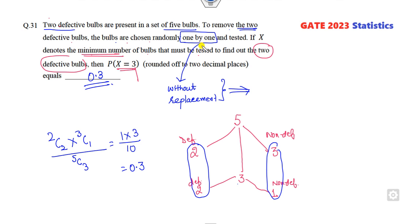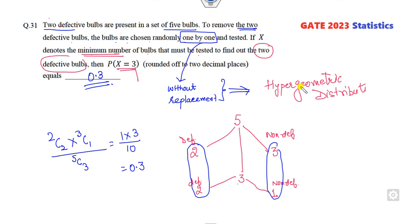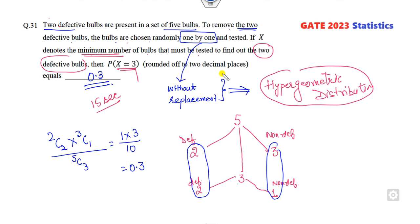That is very simple. You have to read the statement — since this is a question related to without replacement, remember this is called the hypergeometric distribution. If you want more questions related to these shortcut tricks, you can see my lecture on hypergeometric distribution in my playlist on probability and statistics. Within 10 to 15 seconds you can solve this if you remember this trick.